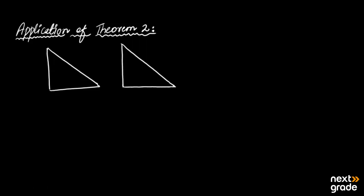The theorem was: if two angles of a triangle are congruent, then the sides opposite to them are also congruent.